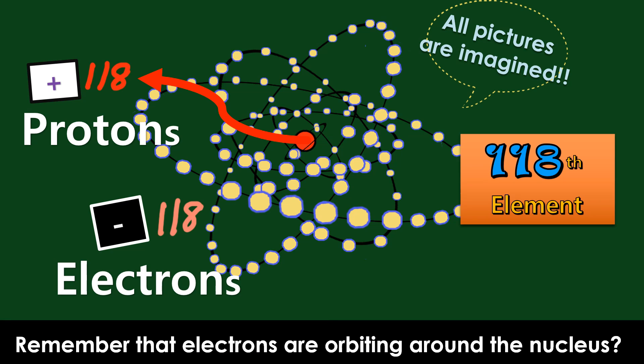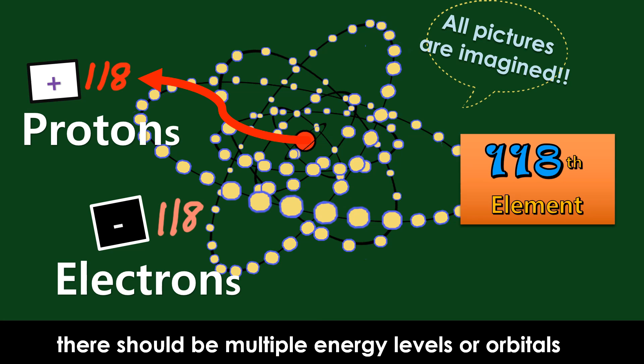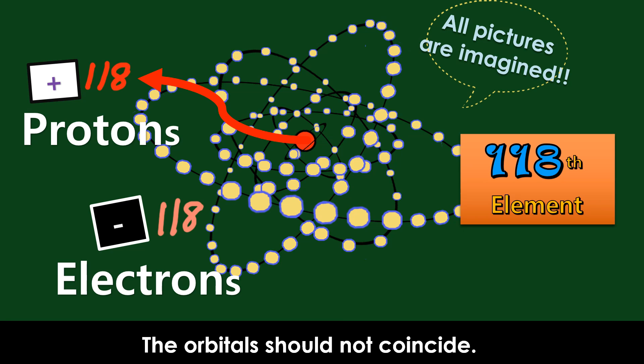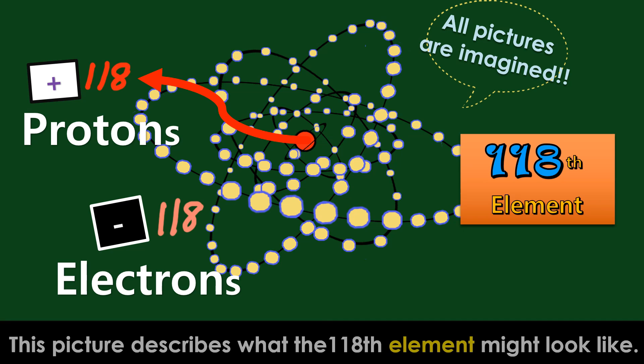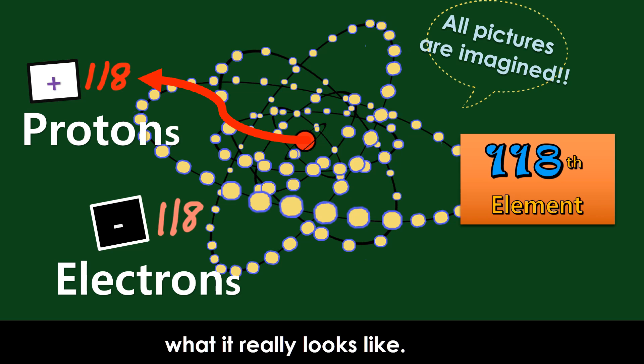Remember that electrons are orbiting around the nucleus? When there are multiple electrons, there should be multiple energy levels, or orbitals, so that the electrons don't crash into each other. The orbitals should not coincide. This picture describes what the 118th element might look like. It's an imagined picture because human eyes cannot see what it really looks like.